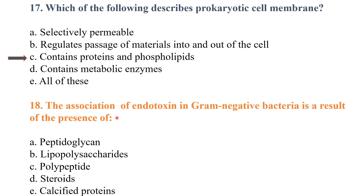The association of endotoxin in gram-negative bacteria is a result of the presence of the gram-negative cell wall. The main component that acts as an endotoxin is LPS — lipopolysaccharide.